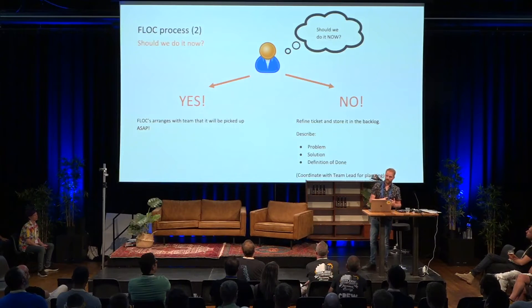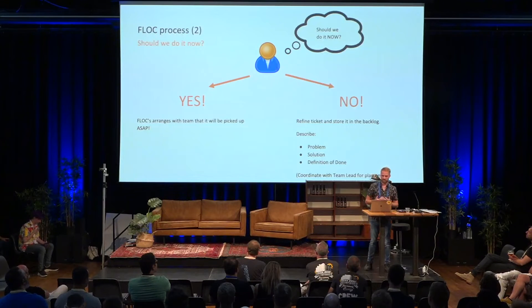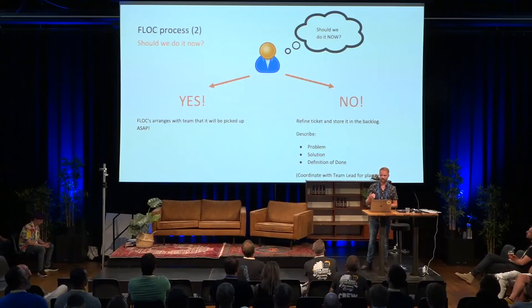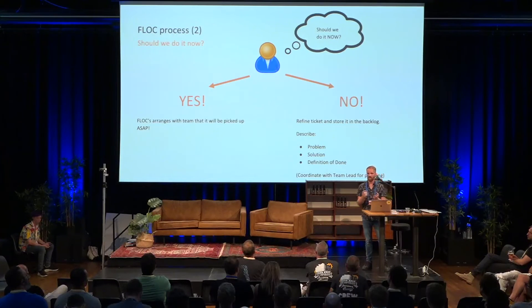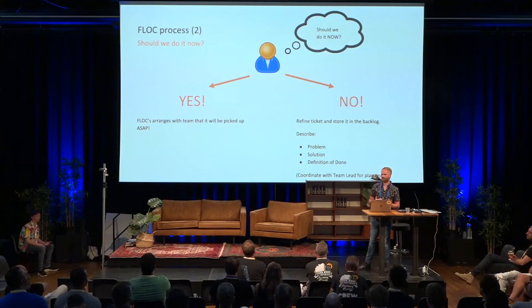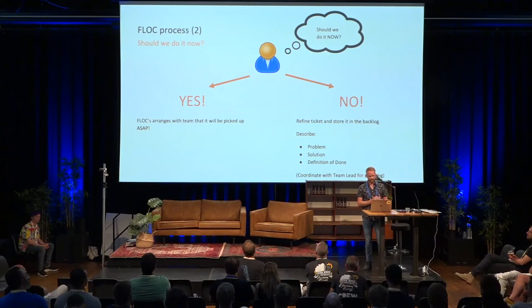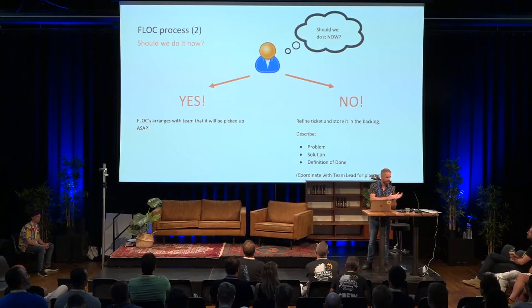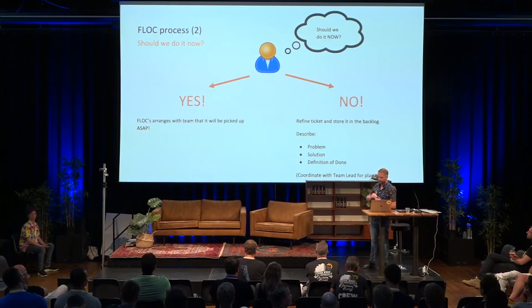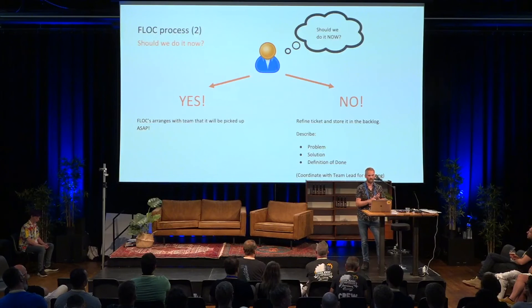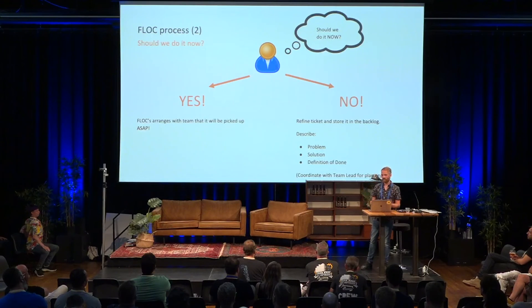When a ticket or request comes in, it appears on our Flock Planning Kanban board. The Flock has to answer one important question: should we do it now? We have created guidelines to make that question easier to answer — for example, does the customer have an SLA? Or, is it something the Flock can do in less than two minutes? Because then it's probably better to do it immediately, otherwise processing will cost more time. If the request is urgent, the Flock escalates the ticket and arranges with the team for it to be picked up as soon as possible. If not, the Flock is responsible for refinement of the ticket: describing the problem, the solution, and the definition of done, then processing it onto the Kanban board so it can be picked up when the time is right.